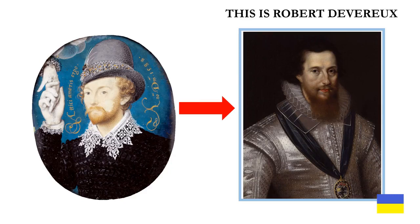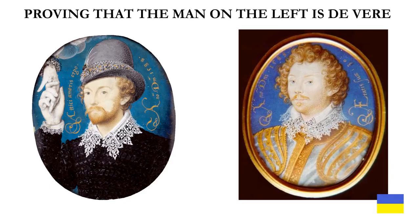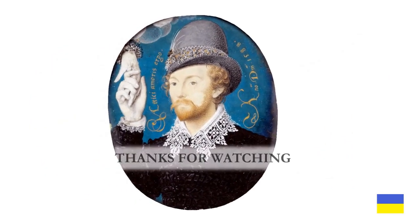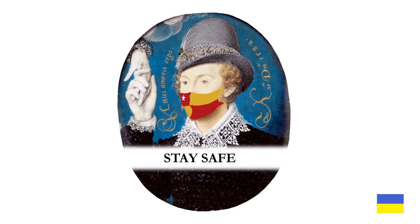This is Robert Devereux, the second Earl of Essex, who clearly has darker hair than the other man. I believe that the man on the left is Edward De Vere. Thanks for watching, stay safe.